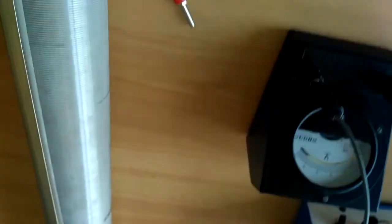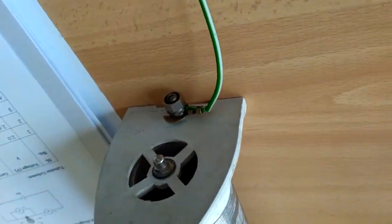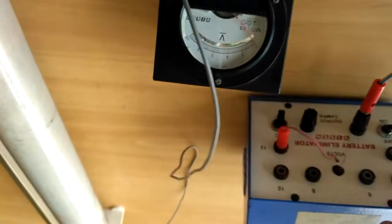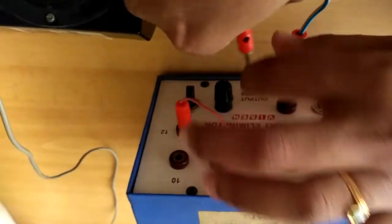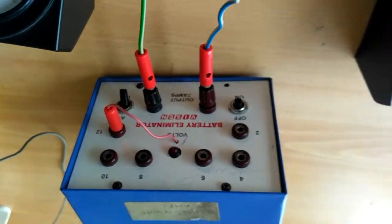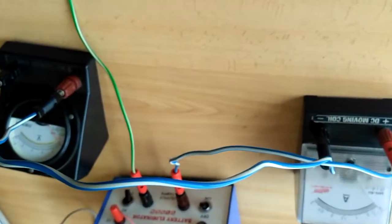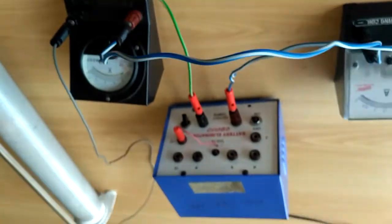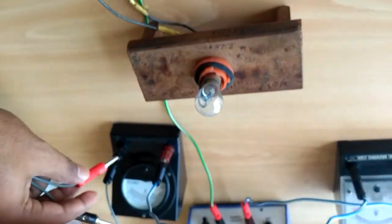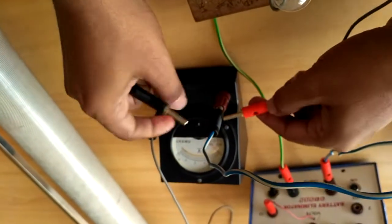Then the rheostat lower end should be connected to source negative. It is always better to take the bulb across the voltmeter, so connect the bulb across the voltmeter.